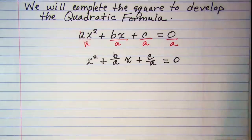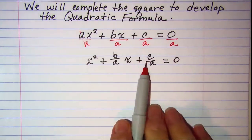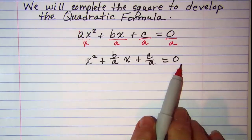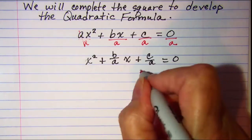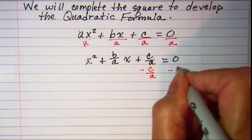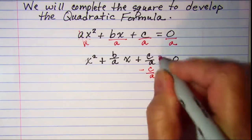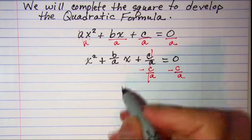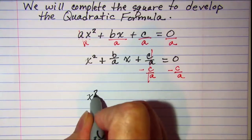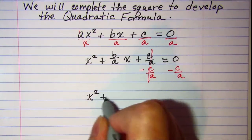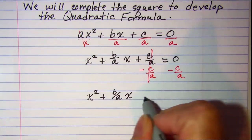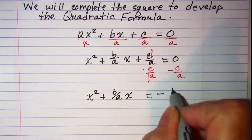The next step is to move the constant term to the right side of the equation. So I'll subtract c over a from both sides and these cancel. Now I have x squared plus b over a times x equals negative c over a.